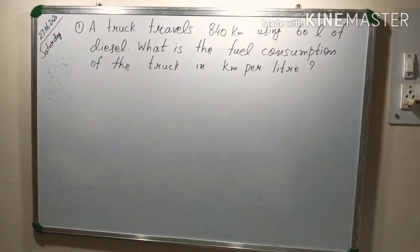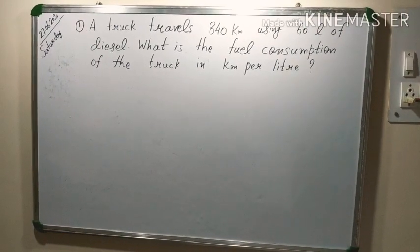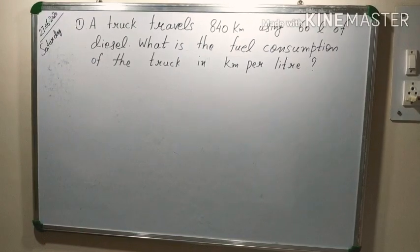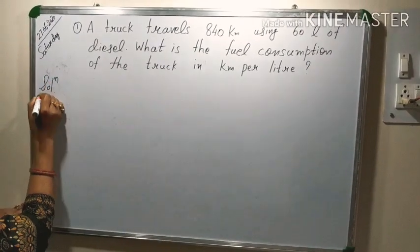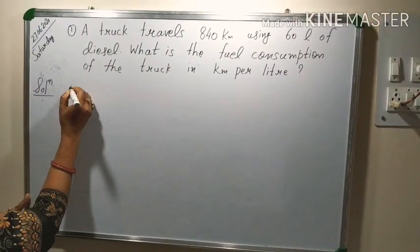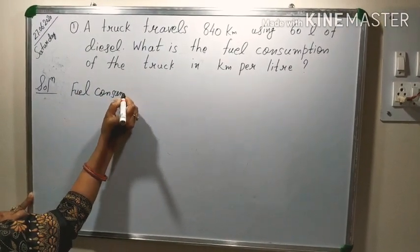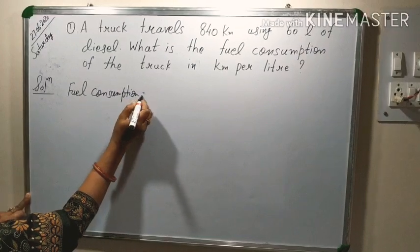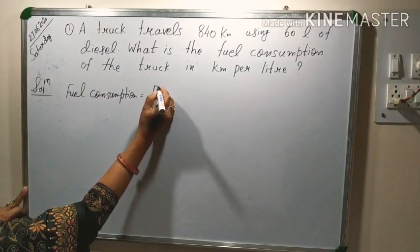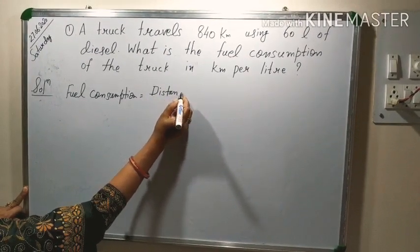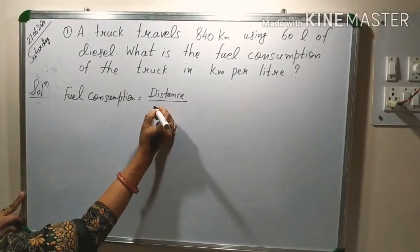First question was, a truck travels 840 km using 60 litre of diesel. What is the fuel consumption of the truck in km per litre? So, here you are asked fuel consumption. In numerator want to write distance and in denominator it is its fuel.